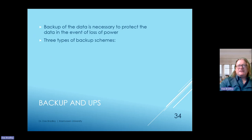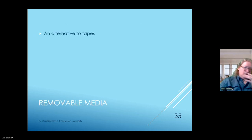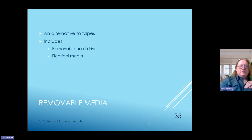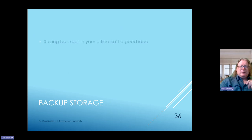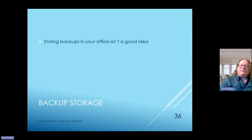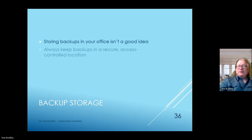There are three basic types of backup schemes: full backup, incremental backup, and differential backup. Alternatives to tapes include removable hard drives, full optical media, and rewritable CD-ROMs and DVDs, which can provide a conventional way to archive data. Storing backups in your office is generally not a good idea—a disaster like a fire or flood could affect not only equipment but also data stored on tapes or other media. It is recommended to rotate your media with off-site or commercial solutions.